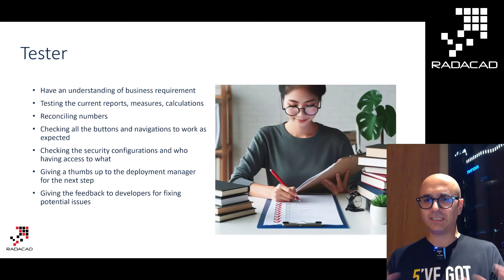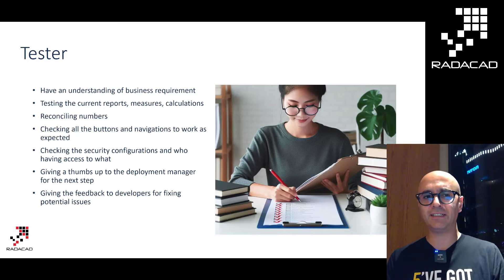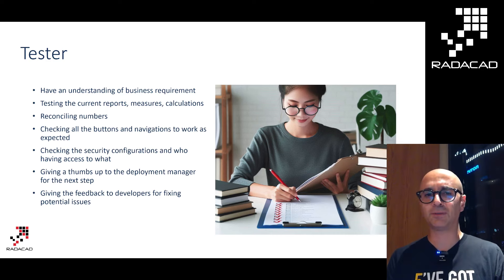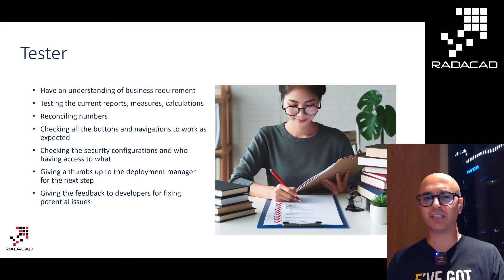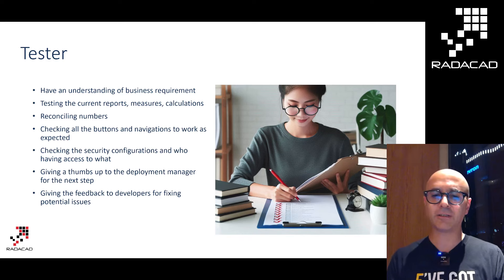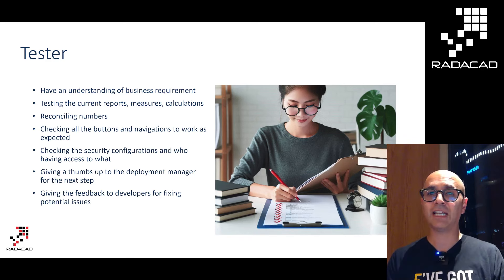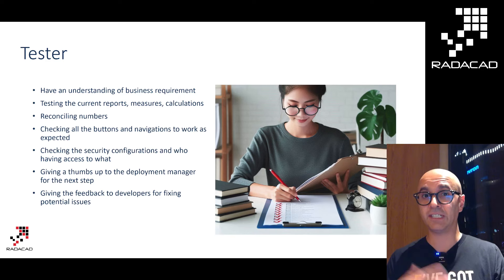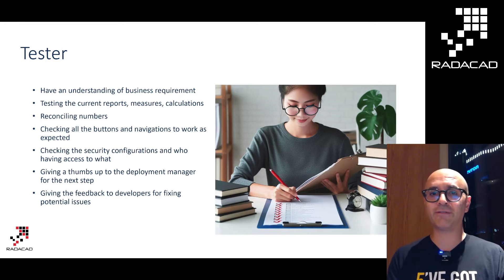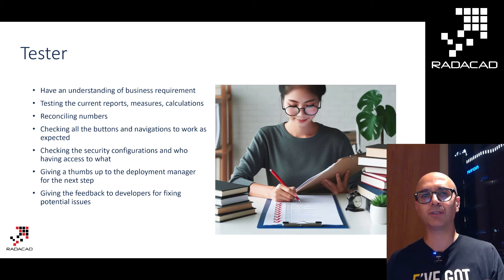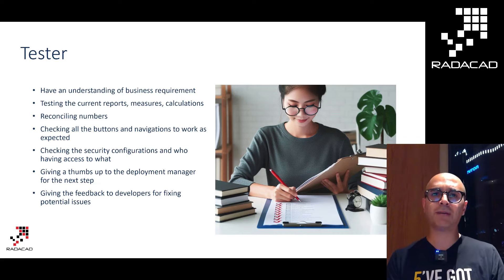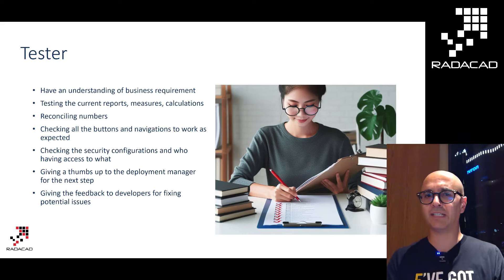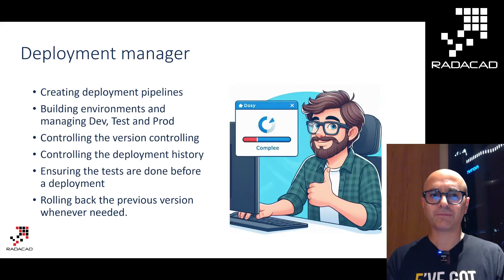Having someone to test the work done by other team members is important. The tester has a checklist and goes through all measures, calculations, and visualizations, making sure buttons do what they are supposed to do, navigation goes to the right places, and numbers are correct — reconciliation is an important part of this. This role either gives a thumbs up to move changes to live, or goes back to developers to flag errors to be fixed.